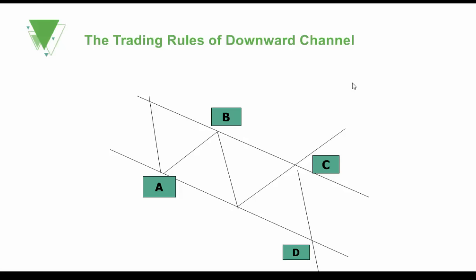The trading rules of the downward channel are different from the upward channel. A, B, C, D: A is a buy point because the trend line has support for the price. B is a sell point because of the resistance. C is a buy point because the price upward breaks through the downward channel. D is also a buy point — the price fell below the trend line, but will have a rebound, so D is a buy point.